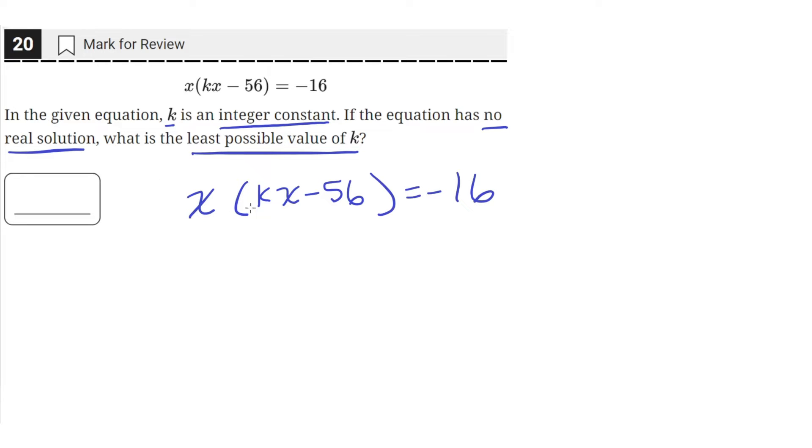We have to find a value of k so that this equation has no real solution. So let's first distribute out this x. We'll get kx squared minus 56x, and let's move this negative 16 to the other side. So we'll add 16 to both sides and then negative 16 plus 16 is just zero.